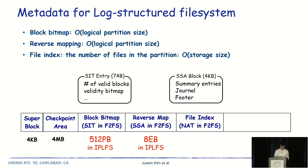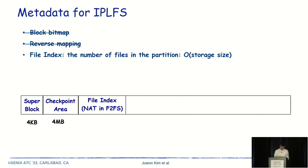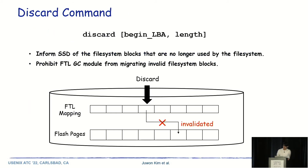With the infinite logical partition, their sizes become 512 petabytes and 8 exabytes respectively. Both sizes are too huge to maintain. Therefore, we carefully trim the block bitmap and reverse mapping in IPLFS. To verify whether it is okay to remove both of them, we searched for their use. Let me explain the discard command first. The discard command contains information of the region to be discarded. It informs the SSD of the file system blocks that are no longer used by the file system. The discard command helps prohibit the FTL garbage collection module from migrating invalid file system blocks.